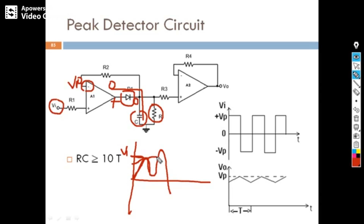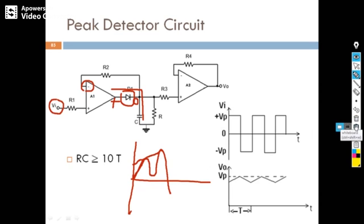When our input once again becomes greater than V1, the output of the comparator becomes positive, that will forward bias the diode, and that will once again recharge the capacitor. The capacitor will continue charging until it catches the new peak. So our output catches the new peak — this is our peak detection signal. This may go up or come down depending on the signal.